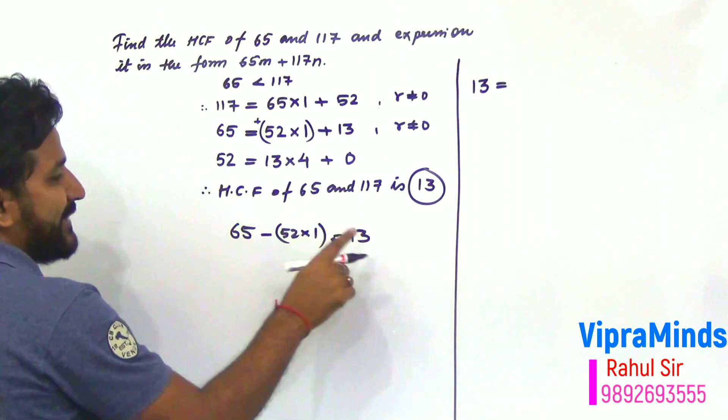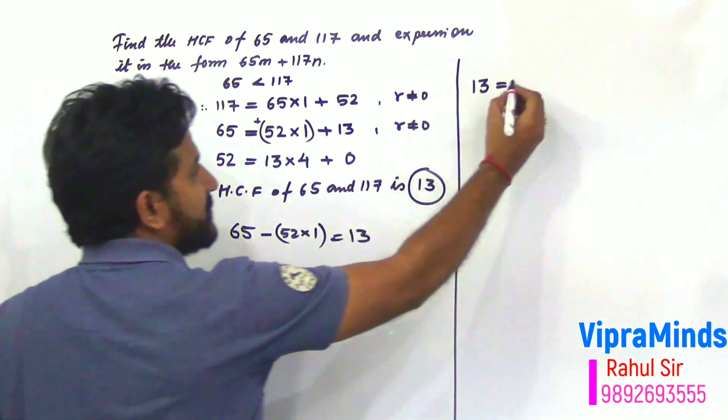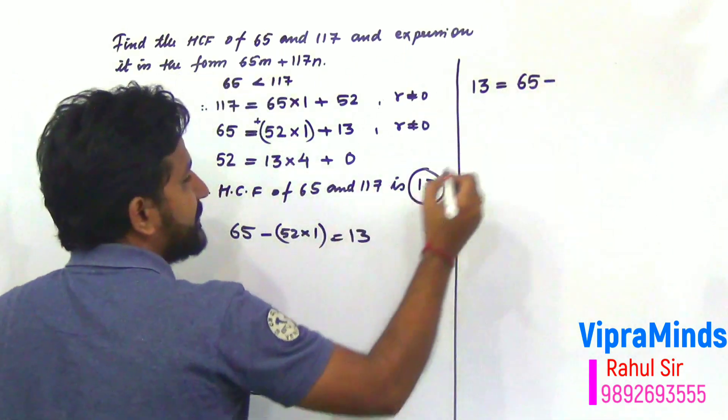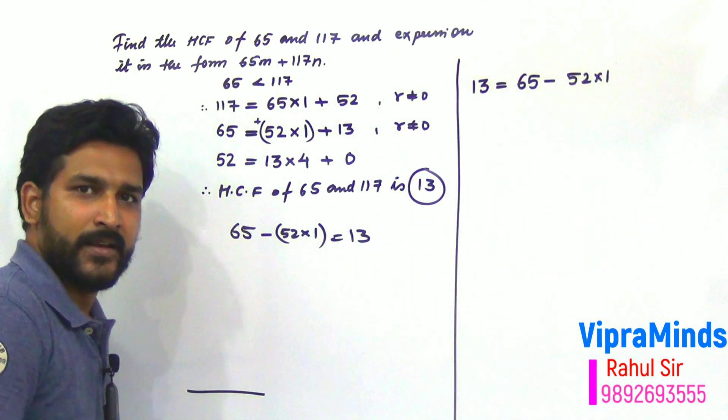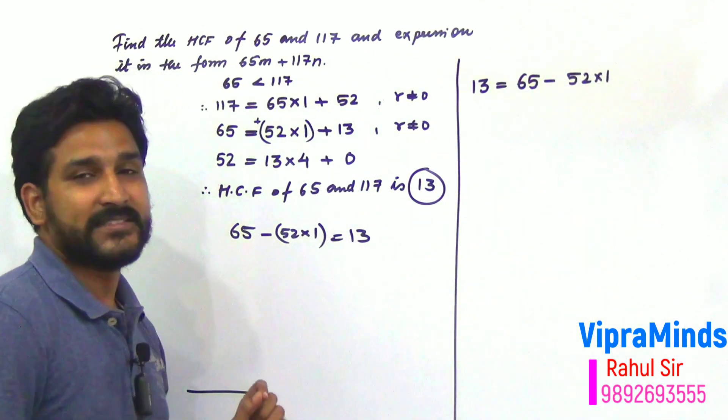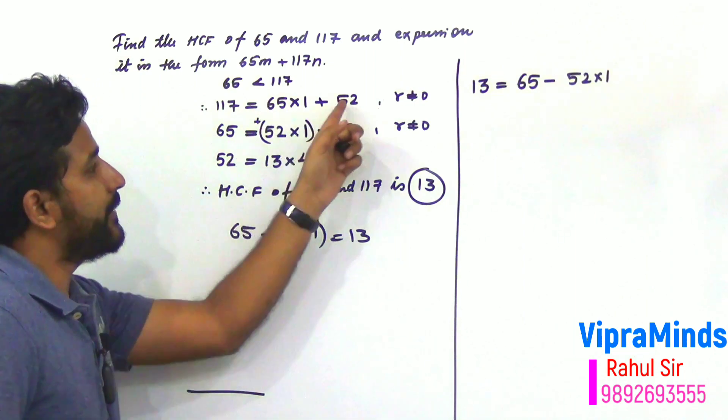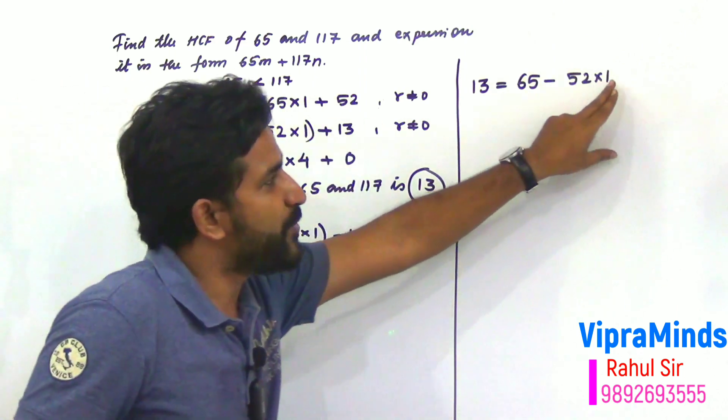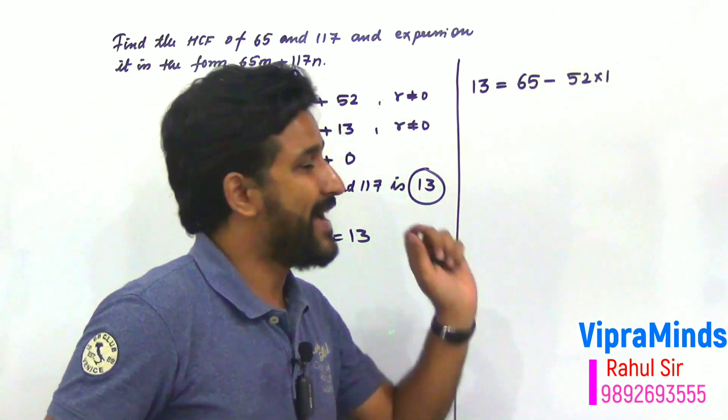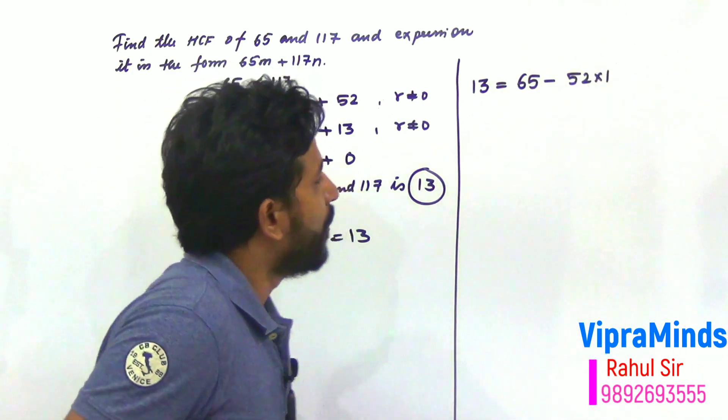So, in the place of 13, it is 13 equals to what? 65 minus 52 into 1. We discussed in last video that whatever divisor, remainder, or dividend values are there, we should not multiply them. We keep them as it is. So, it is 52 into 1, write it as 52 into 1.